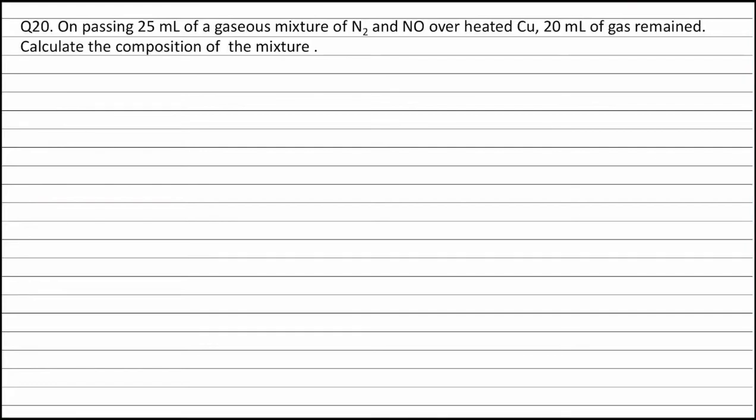Question 20. On passing 25 ml of a gaseous mixture of nitrogen and nitric oxide over heated copper, 20 ml of gas remain. Calculate the composition of the mixture.